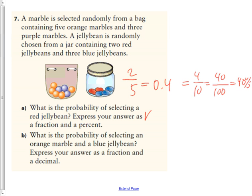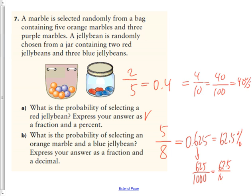So the probability of drawing a red jelly bean from that second jar is 40%. It says, what is the probability of selecting an orange marble? So here we have 8 total marbles, 5 of which are orange. As a decimal, that is 0.625, which is 62.5%. Why? Because it's 625 thousandths, which is 62.5%.